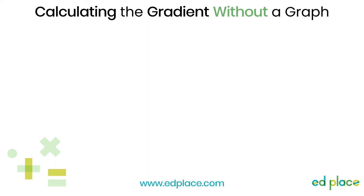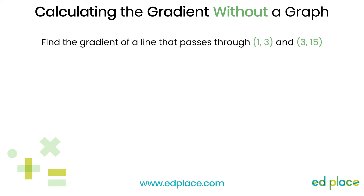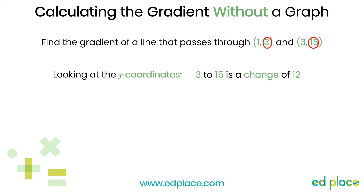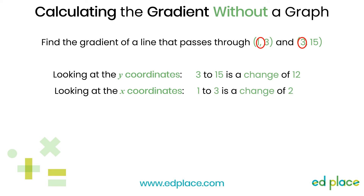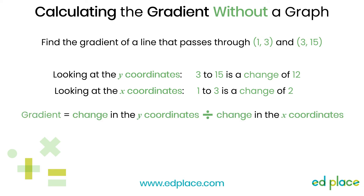You don't even need to have the graph in front of you to find the gradient. As the gradient of a line is the change in y coordinates divided by the change in the x coordinates, we just need two pairs of coordinates. For example, an exam question may say: find the gradient of a line that passes through (1, 3) and (3, 15). Looking at the y coordinates — 3 and 15 — the change is 12. Looking at the x coordinates — 1 and 3 — the change is 2. So we divide 12 by 2, giving a gradient of 6.